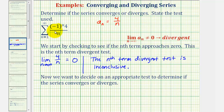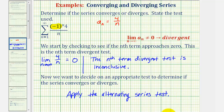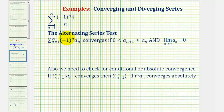Because we have an alternating series, the most obvious test will be the alternating series test, which we'll now apply. The alternating series test tells us an infinite alternating series converges if these two requirements are met: first, zero is less than a sub n plus one, less than or equal to a sub n; and second, the limit as n approaches infinity of a sub n equals zero.